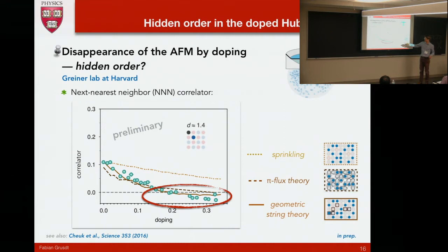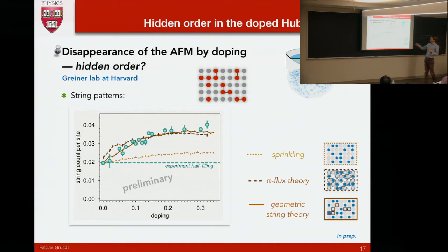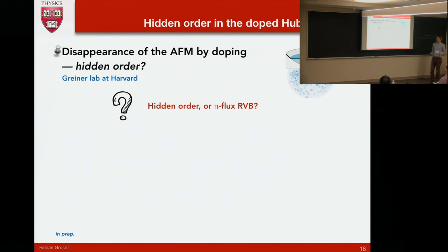We can also look at other things less unusual than just correlators. Here we look at the number of string counts. We take snapshots to determine these string patterns. There's an offset because, in this case, they don't have full resolution. They don't see where exactly the holes are. You can see, as a function of doping, the string count goes up. It kind of saturates around 15 or so percent doping. And again, this count is very well described by just putting in these strings by hand.